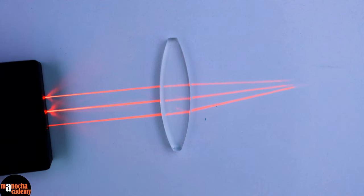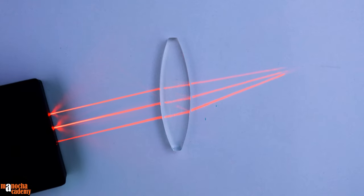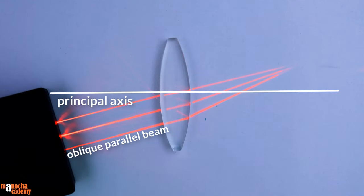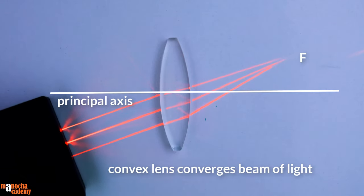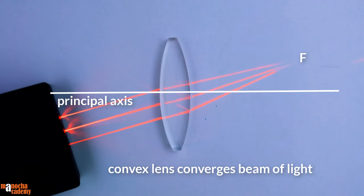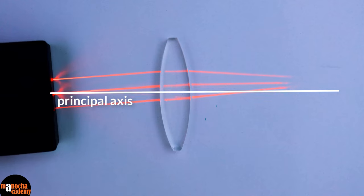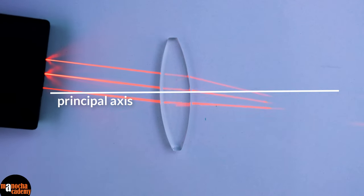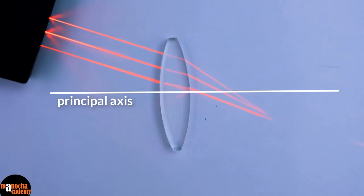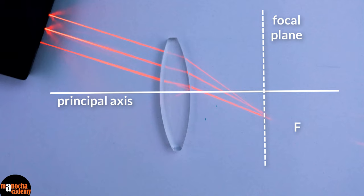If you move the parallel beam of light, you will get an oblique parallel beam like this. Again the convex lens converges the beam of light to a point. But as you can see here, this time the point is not the focus on the principal axis. It lies outside the principal axis on a focal plane that passes through the focus.